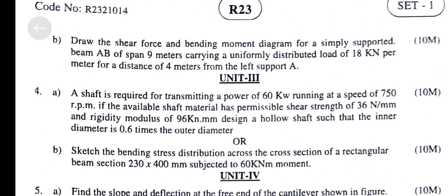Draw the shear force and bending moment diagrams for a simply supported beam AB of span 9m, carrying a uniformly distributed load of 18kN per meter for a distance of 4m from the left support.